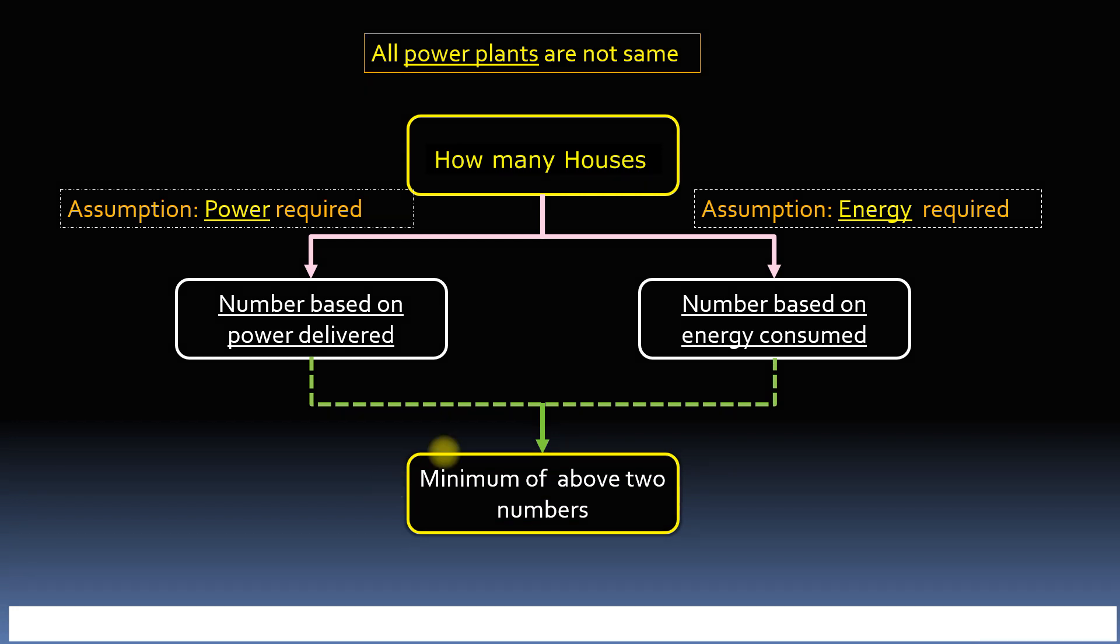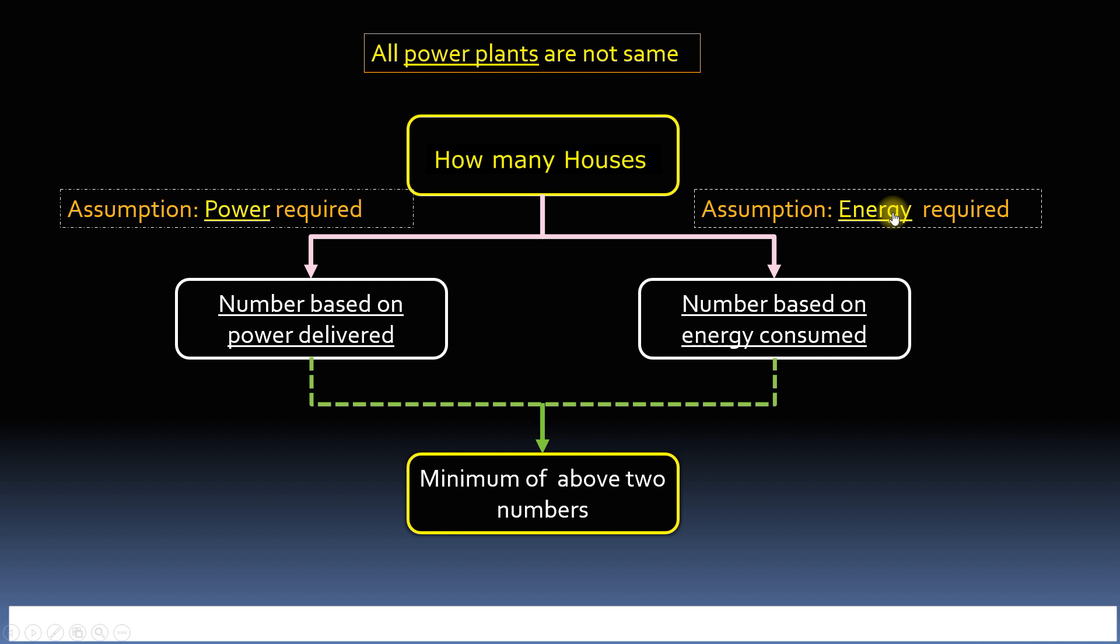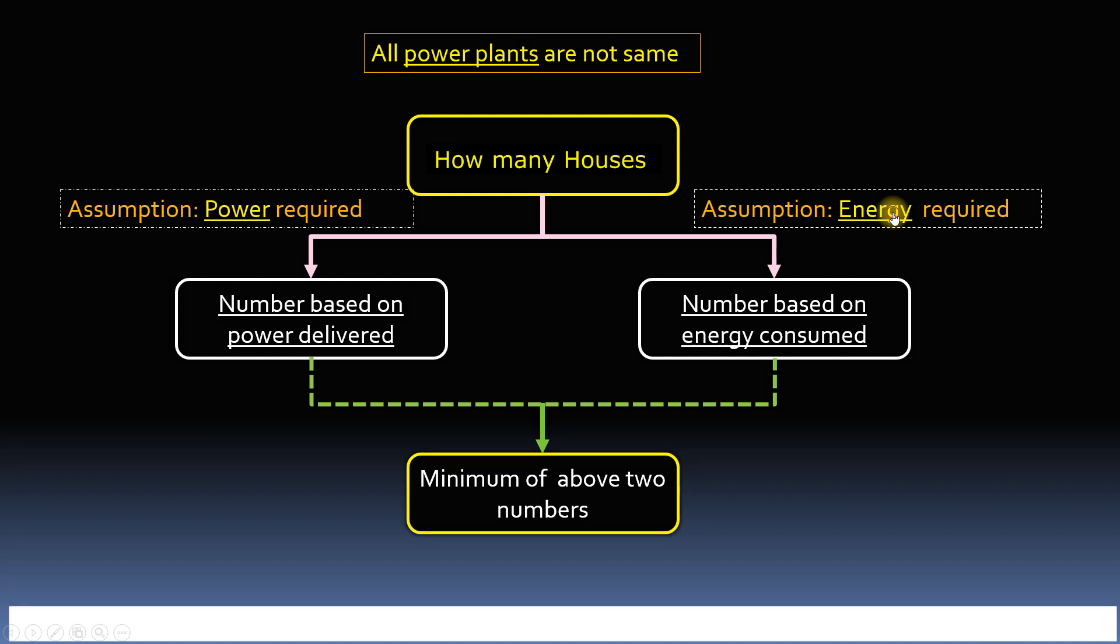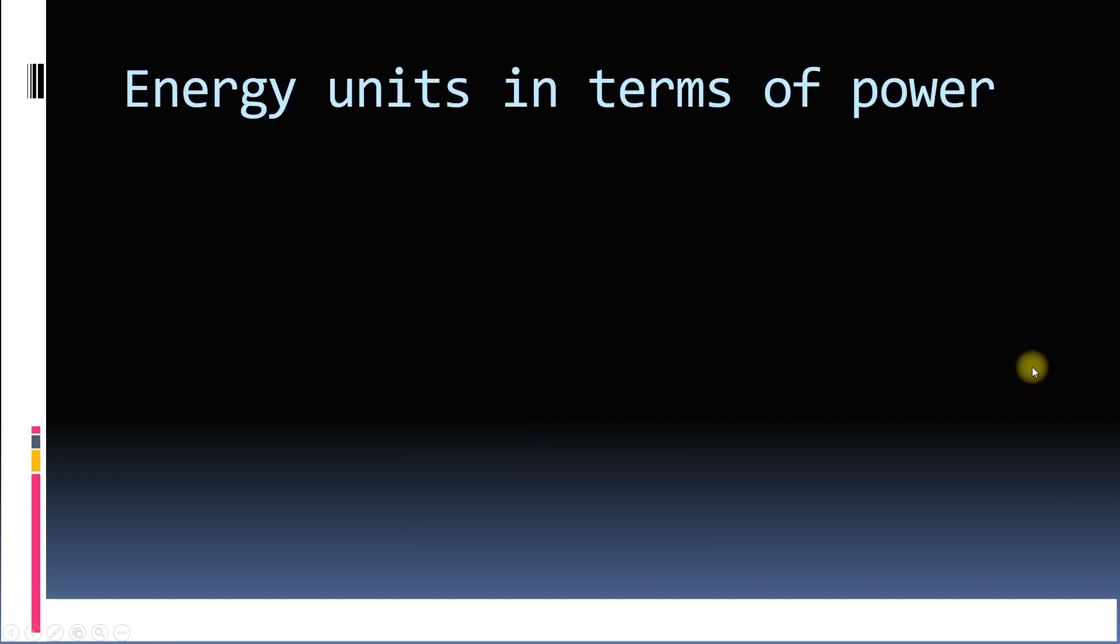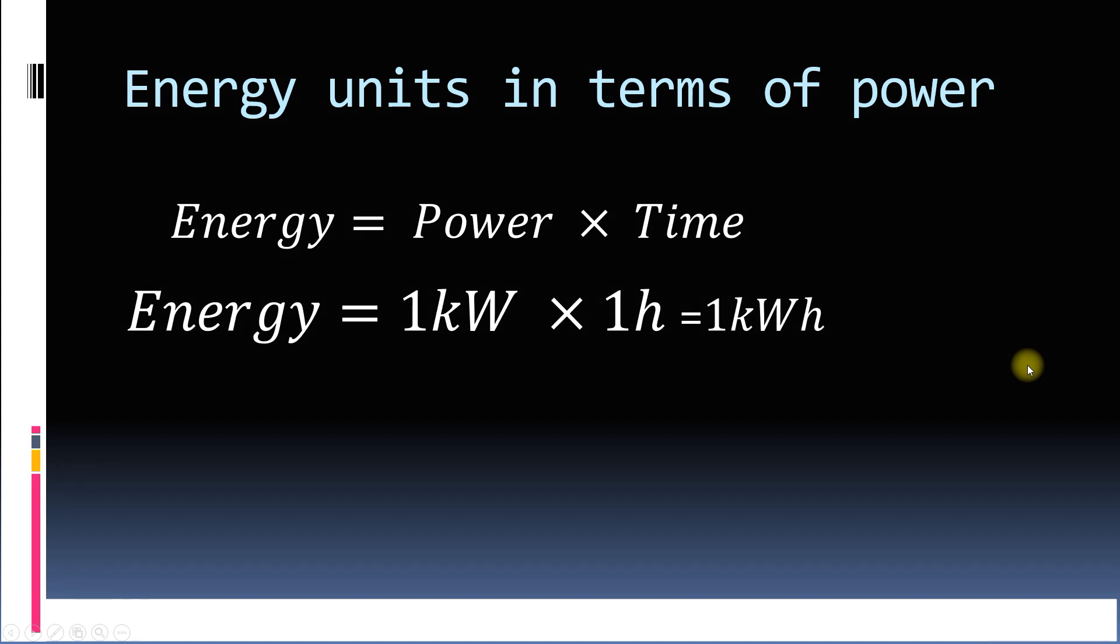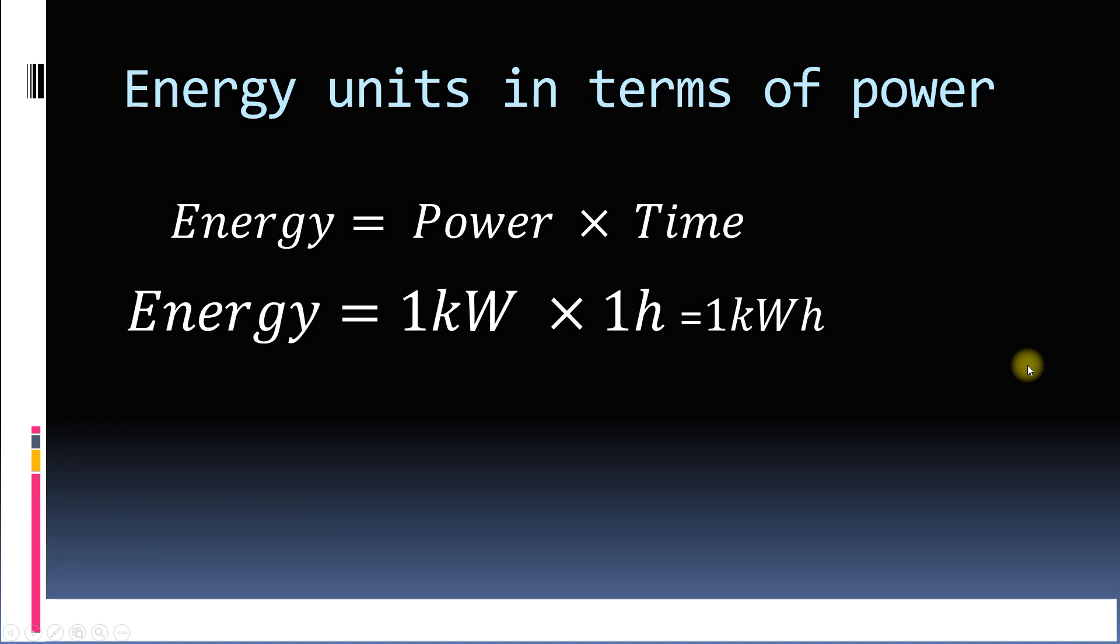Our first assumption is how much electrical energy is required by each house. Energy can be written as power times time. So if power of one kilowatt is delivered for one hour, then the energy supplied is one kilowatt hour. You can know more about energy units in my earlier video, link for which is given above and also in the description. We also know that one megawatt hour is equal to 10 lakh watt hour or 1000 kilowatt hour.